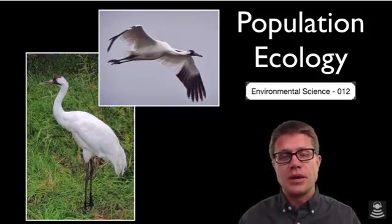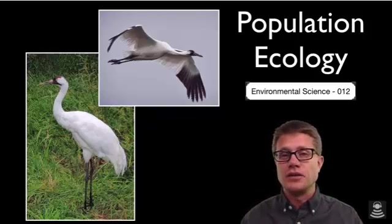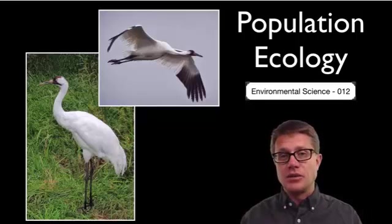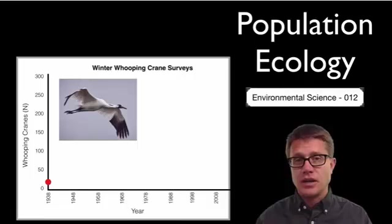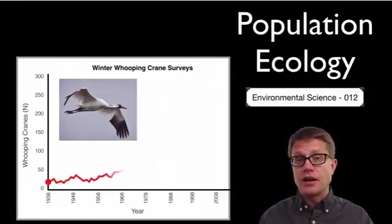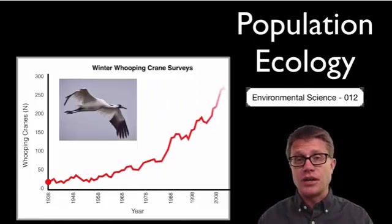One of the greatest conservation stories in biology is the story of the whooping crane. They used to number 10,000 in the US, but by 1938 their numbers had dropped to only 15 individuals. Scientists had to figure out where they were breeding and how to protect those areas. You can see the population is starting to rebound.